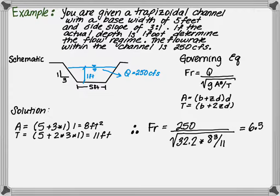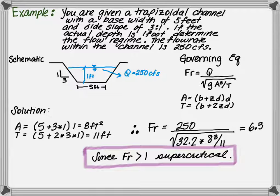Plugging this in with a base width of 5, side slopes of 3, and a depth of flow of 1 foot, we get an area of 8 square feet and a top width of 11 feet. The Froude number as a result is 6.5. 6.5 is much greater than 1, resulting in supercritical flow.